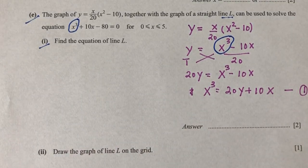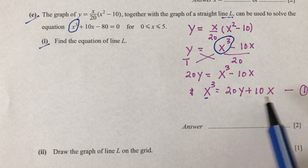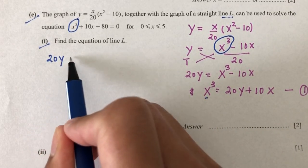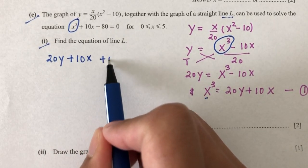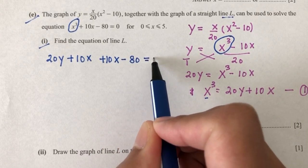Now, what you do is you have to replace this by this value right here. So x power 3 will be 20y plus 10x. Now, plus 10x minus 80 is equal to 0.